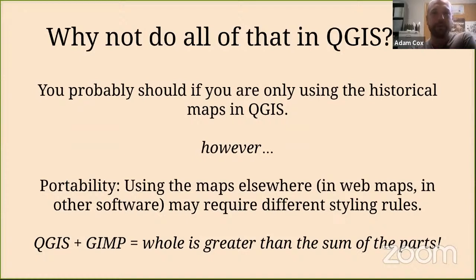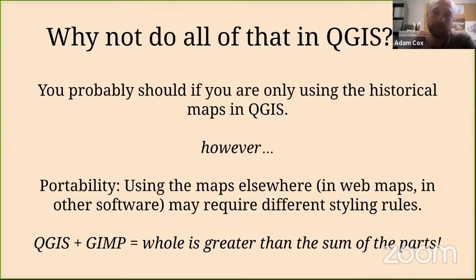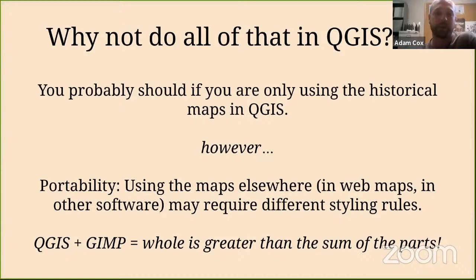A reasonable question at this point is: why not just do all of that in QGIS? QGIS has tons of really great raster styling options, and you can do pretty much everything I've described in QGIS. If you use these maps in QGIS and produce a map from QGIS, you probably don't have to use GIMP at all. But for my applications, the end goal is often making these into web maps or using them elsewhere in different software and formats, so modifying the actual images makes transportation much more robust. These are also two really good pieces of software, and it's nice to figure out how to make them work together.